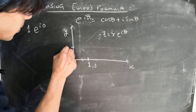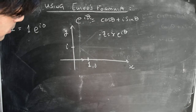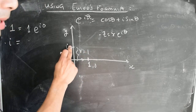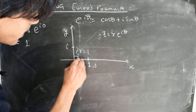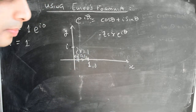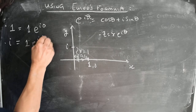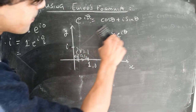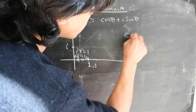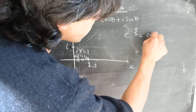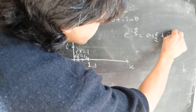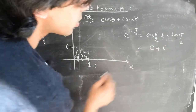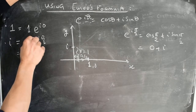Let's also represent the point i, which is one unit along the imaginary axis. It has magnitude r equals 1, and the angle it makes in the counterclockwise direction with respect to the x-axis is pi over 2, so i equals e to the power i·pi/2. We can verify this with Euler's identity: e to the power i·pi/2 equals cosine(pi/2) plus i·sine(pi/2), which is 0 plus i·1, giving us i — consistent with what we wrote.